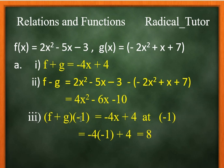Now to find f plus g at negative 1, we substitute x equals negative 1 into f plus g which is negative 4x plus 4 at negative 1. That's negative 4 times negative 1 plus 4, which equals 8.